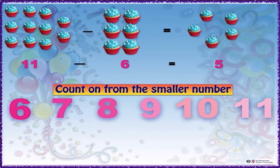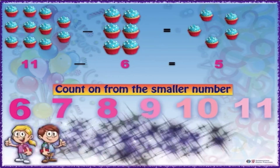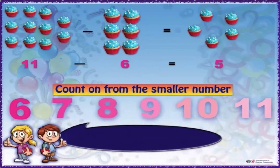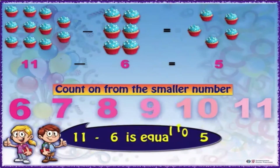You can see that there are only 5 numbers that are left. So finally, 11 minus 6 is equal to 5.